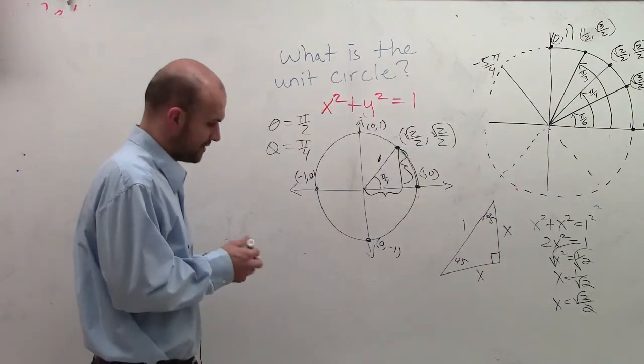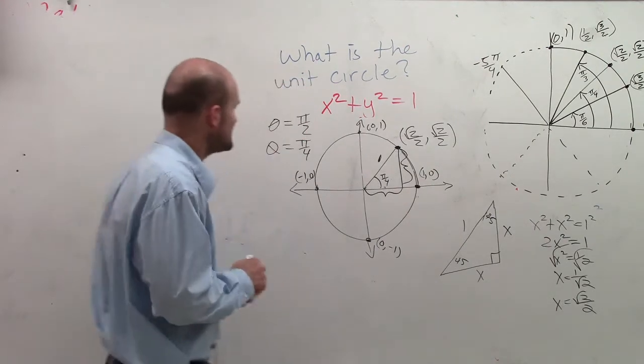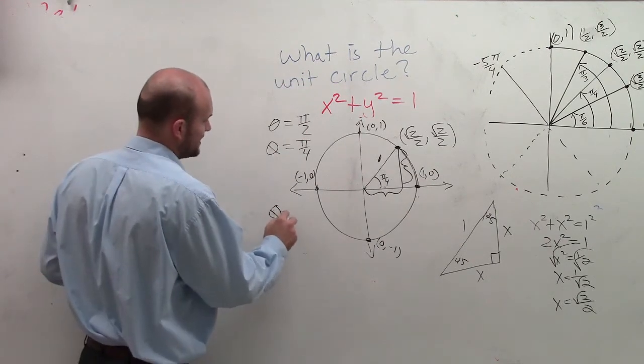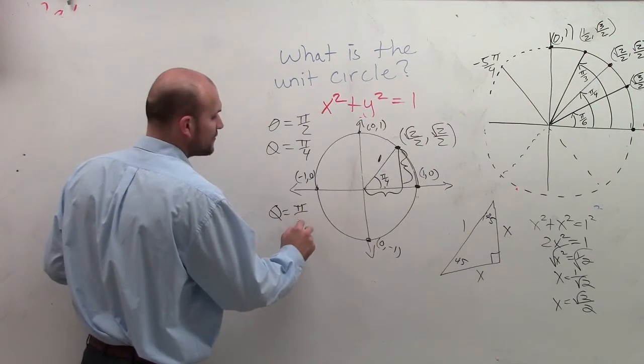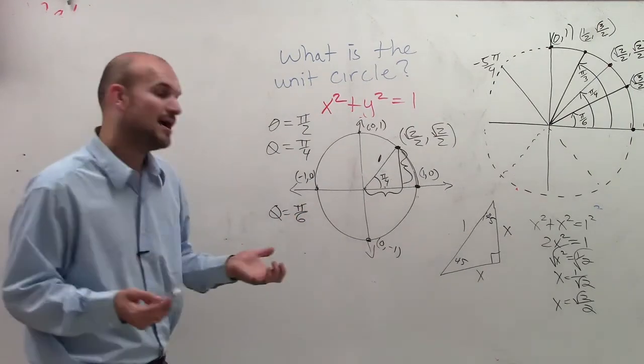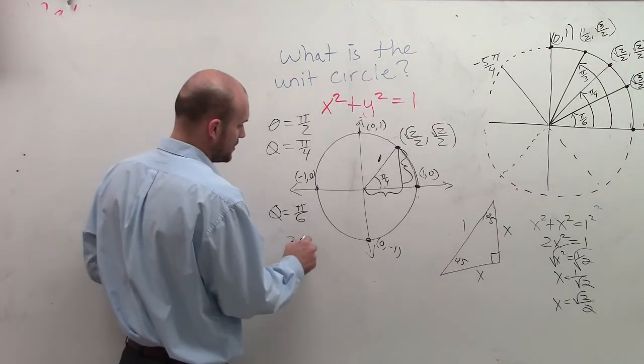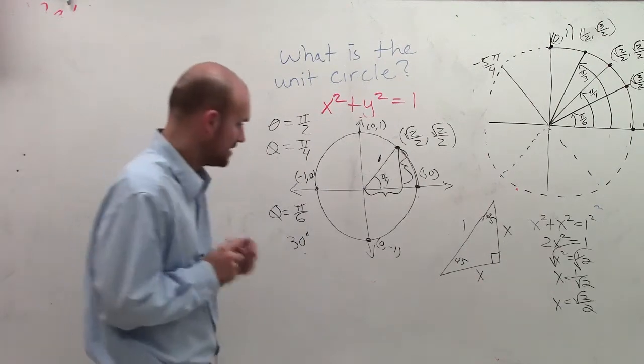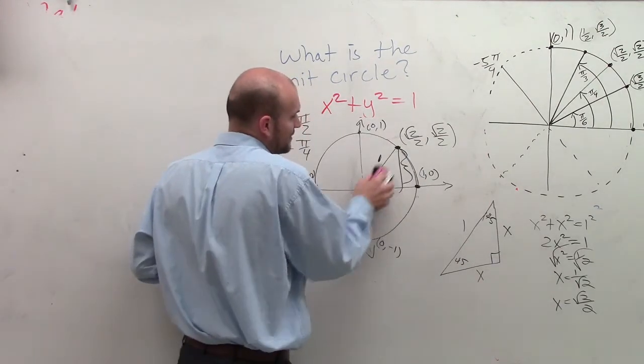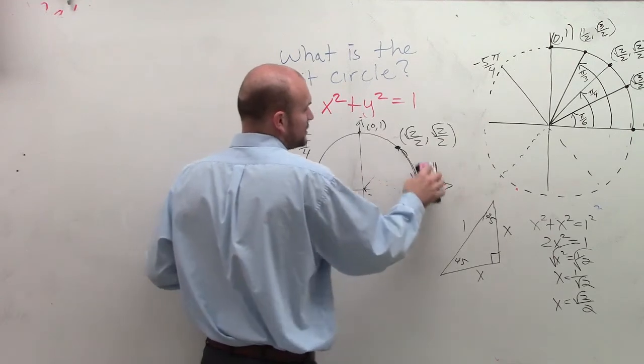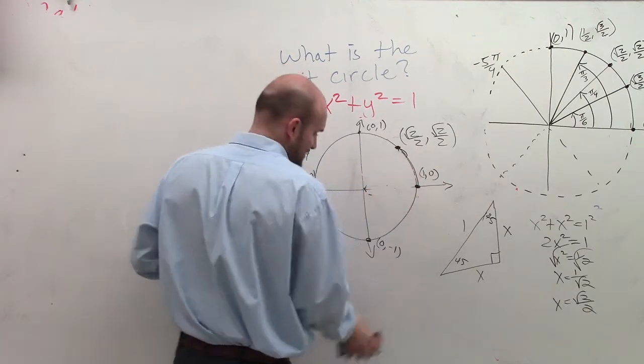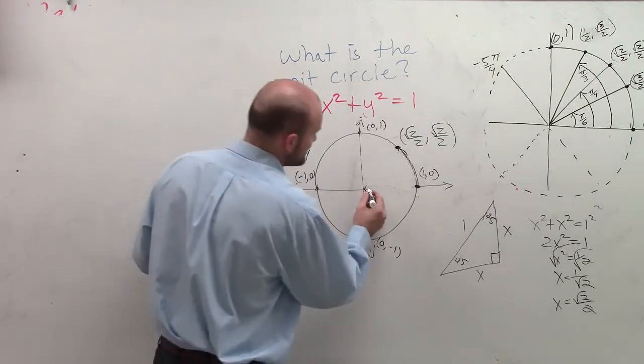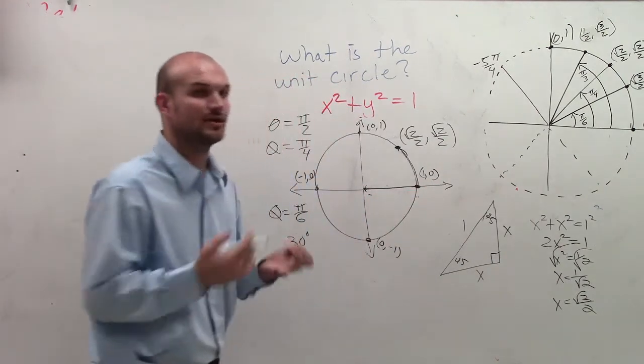So to find our next point, let's look at another one, which would be theta equals pi over 6. Now pi over 6 is equivalent to a 30 degree triangle. And now if you remember your special triangles, you would remember that there's a special kind, which we called our 30, 60, 90 triangle. And that's going to become very helpful in taking a look at this.